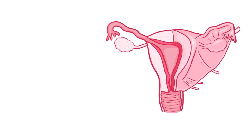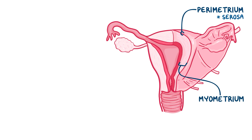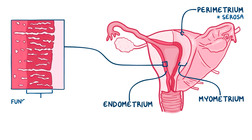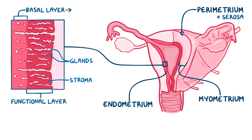The uterus consists of three layers: an outer, thin layer called the parametrium or the serosa, a middle smooth muscle layer called the myometrium, and the innermost layer, the endometrium. The endometrium has two layers: an inner functional layer made up mainly of glands and supporting connective tissue called stroma, and an outer thin basal layer which regenerates the overlying functional layer after each menstrual cycle.